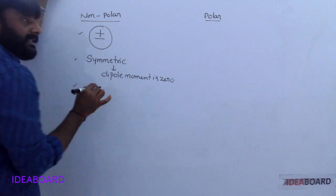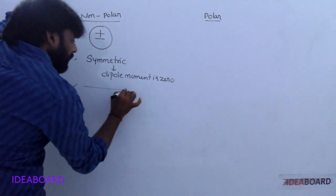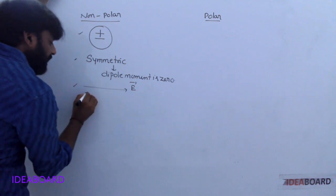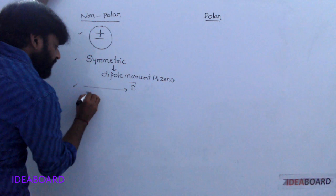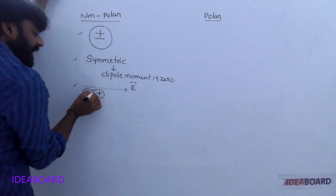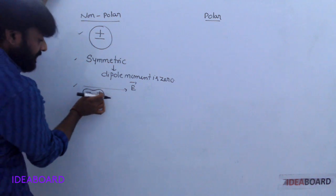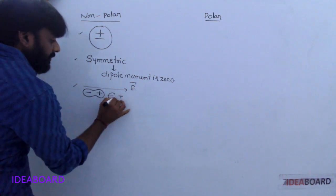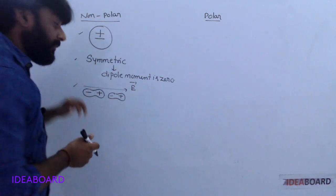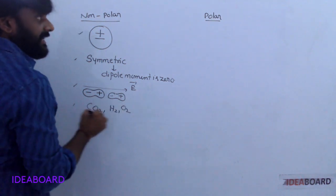If in case a non-polar molecule is placed inside of the electric field, the negative charge and positive charge centers just move from the center. That means some dipole moment is developed. Examples for this are CO₂, H₂, and O₂.